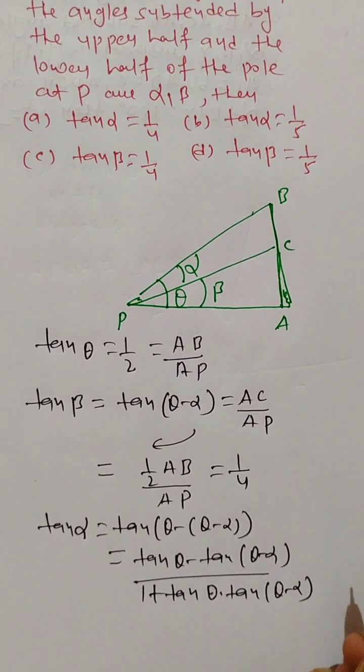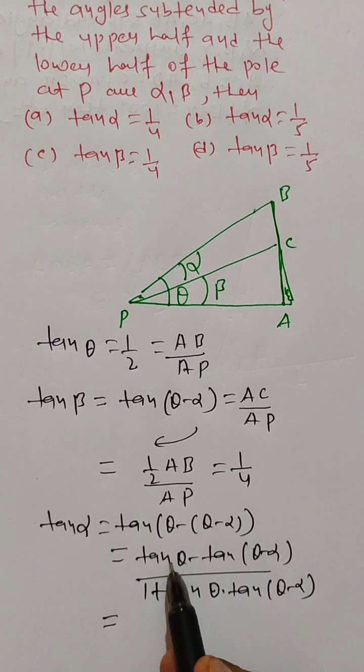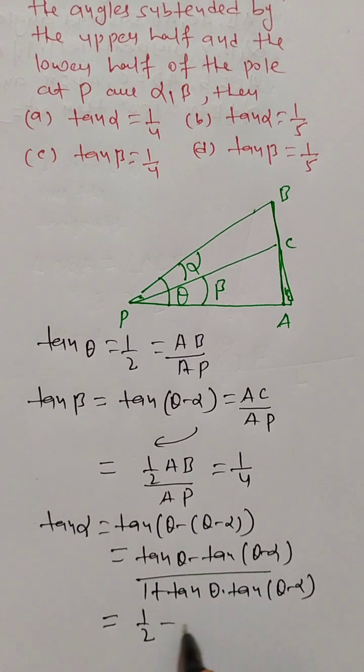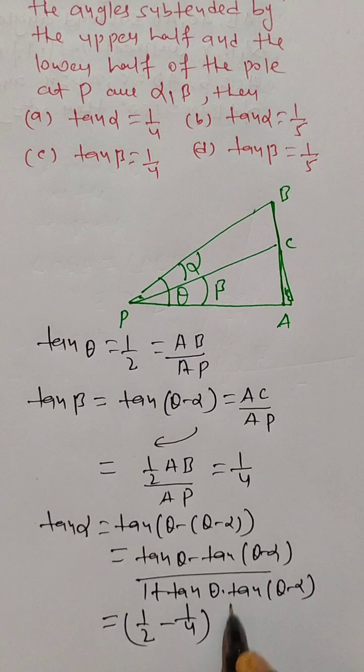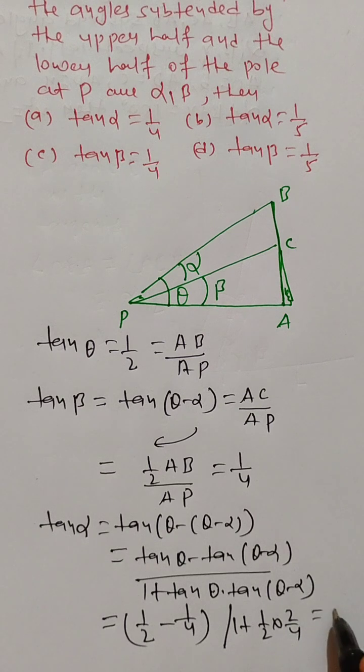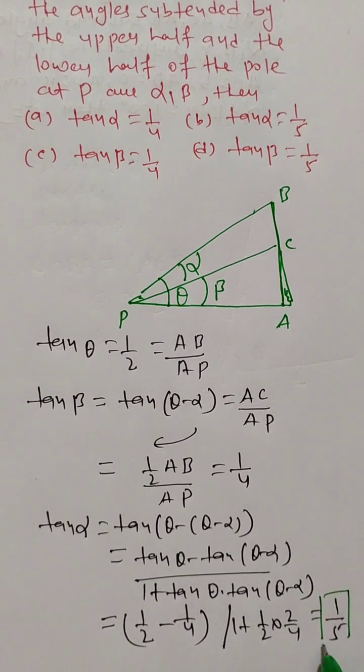And this is equal to, we are just putting the values of tan theta: this is 1 by 2 minus 1 by 4, divided by 1 plus 1 by 2 into 1 by 4, and this equals 1 by 5 here.